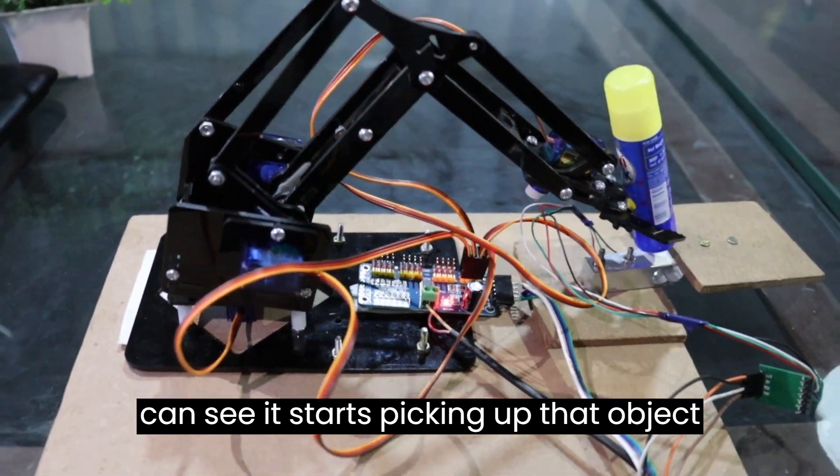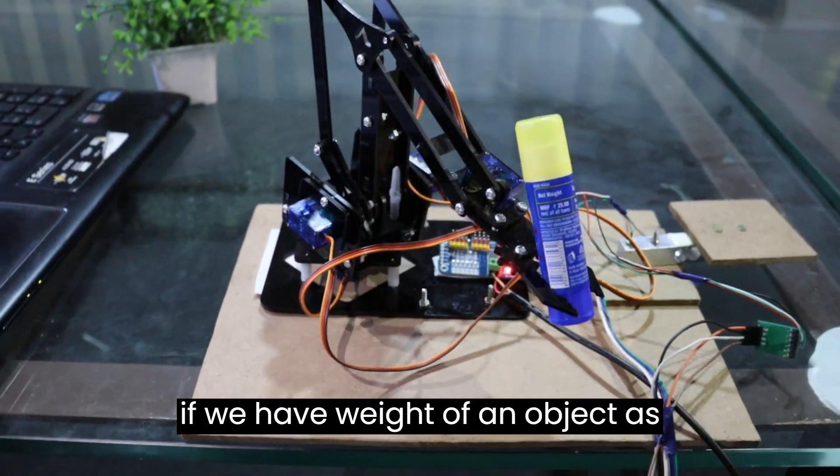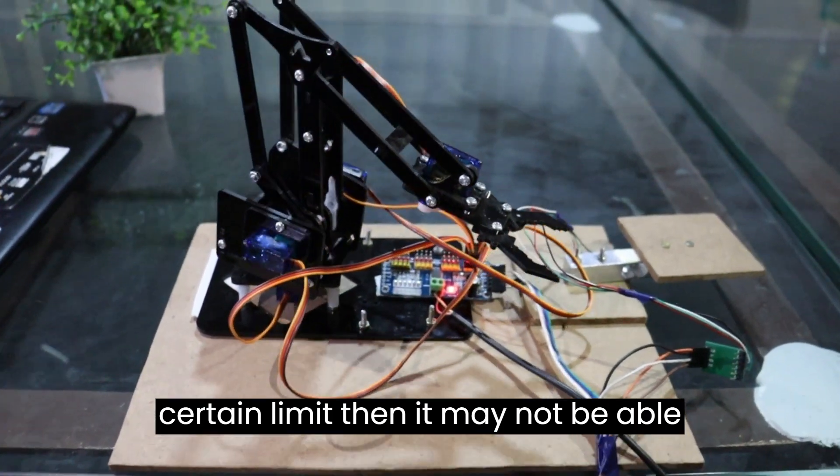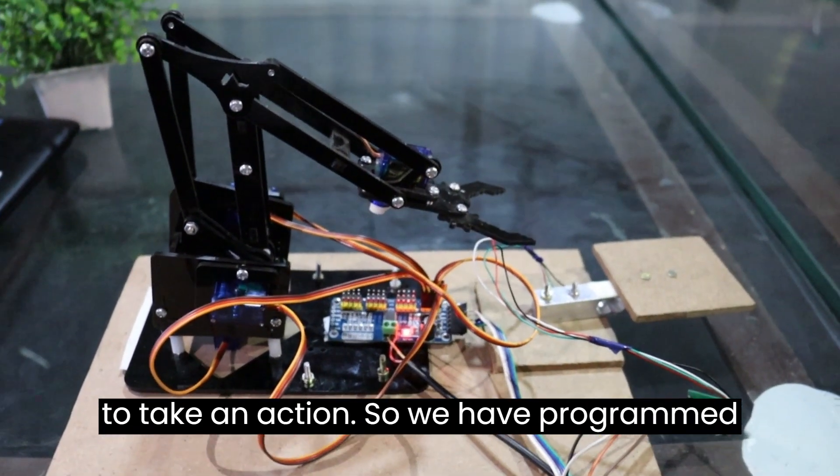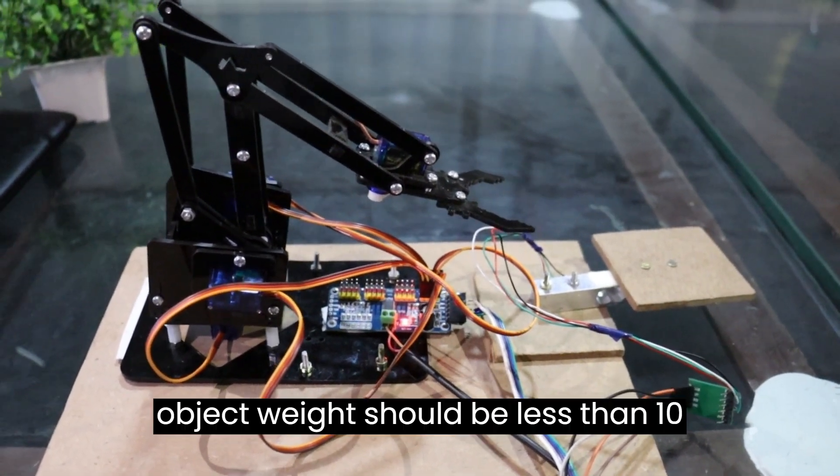If we have the weight of an object at a certain limit, then it may not be able to take action. So we have programmed it to pick objects whose weight should be less than 10 grams.